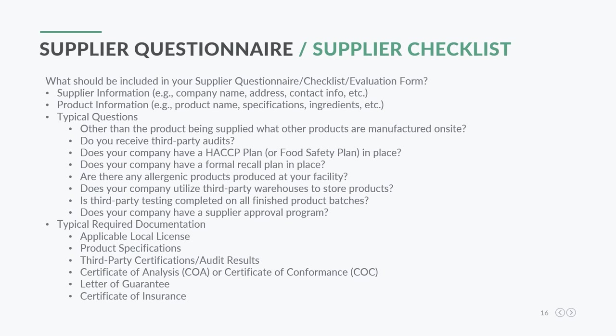Other typical questionnaire questions: Do you receive third-party audits? Does your company have a HACCP plan or food safety plan in place? Does your company have a formal recall plan? That's a big one — if your supplier doesn't have a recall plan, that creates much greater risk for you as a retailer. It's probably one of the number-one things you want to make sure they have. Are there any allergenic products produced at your facility?